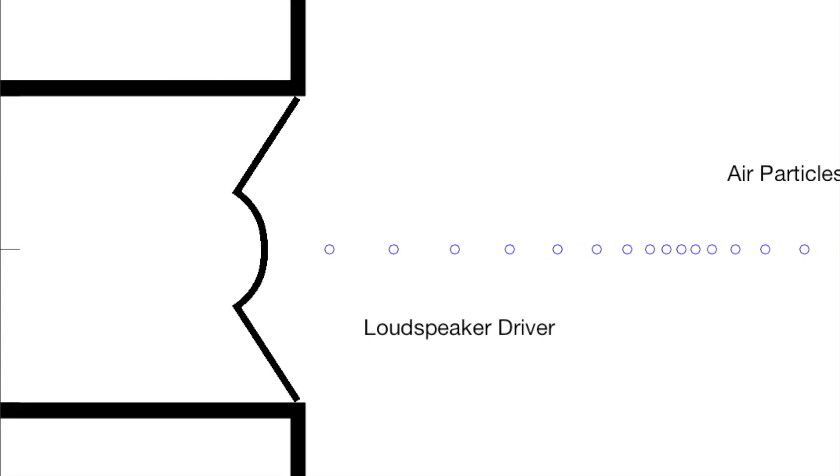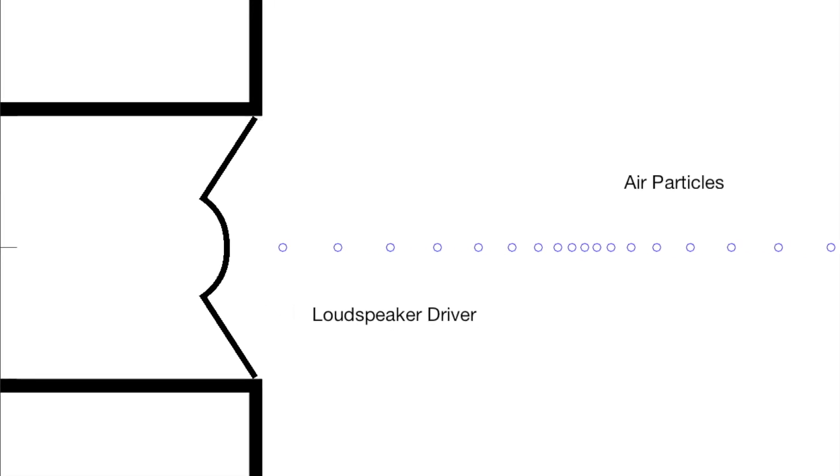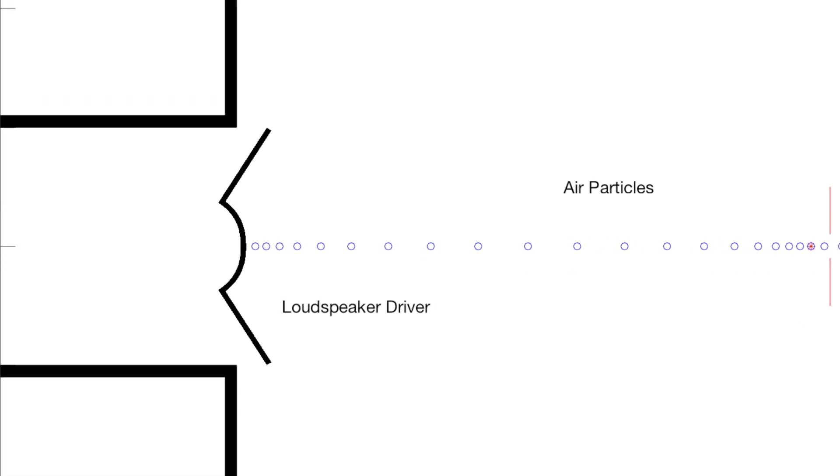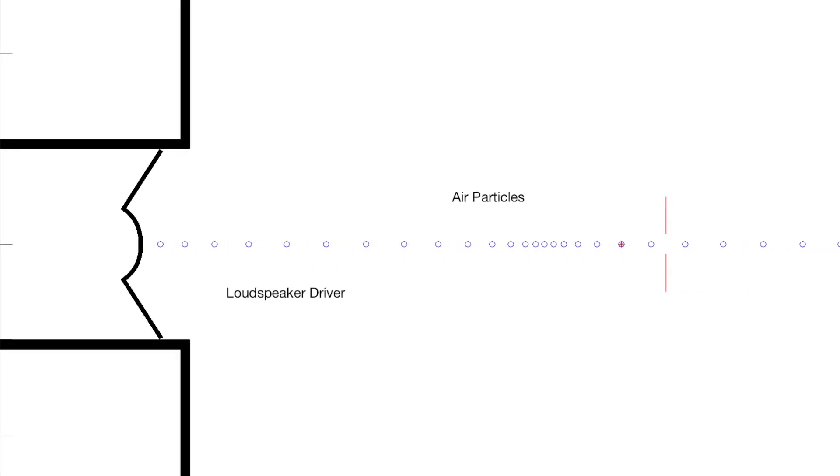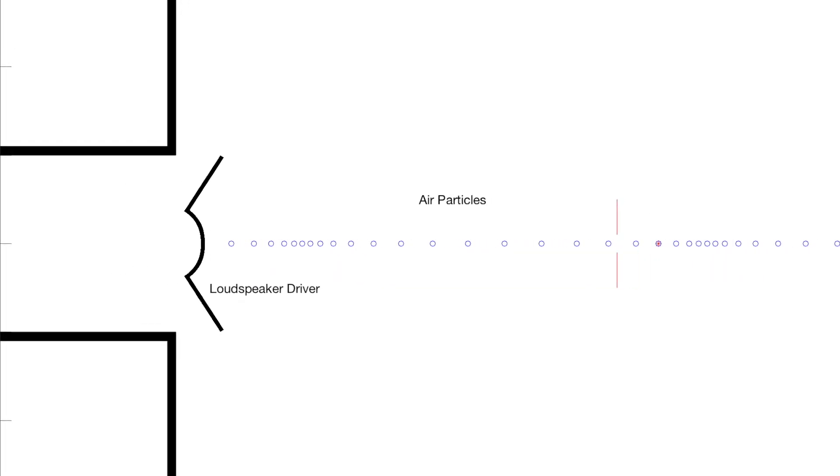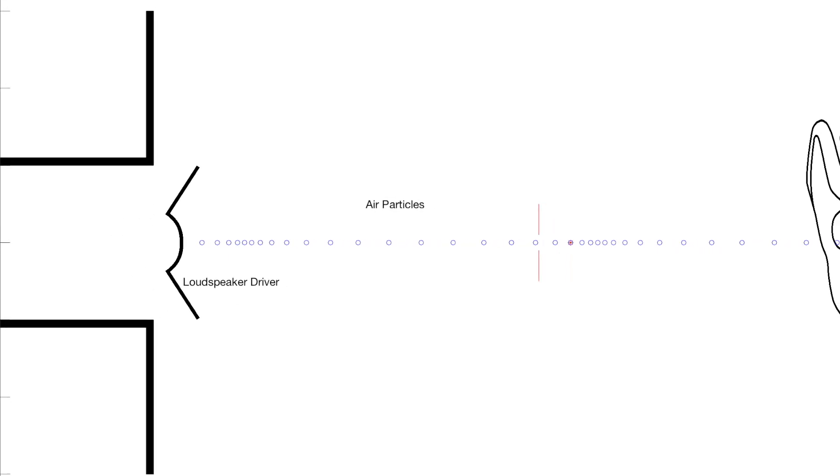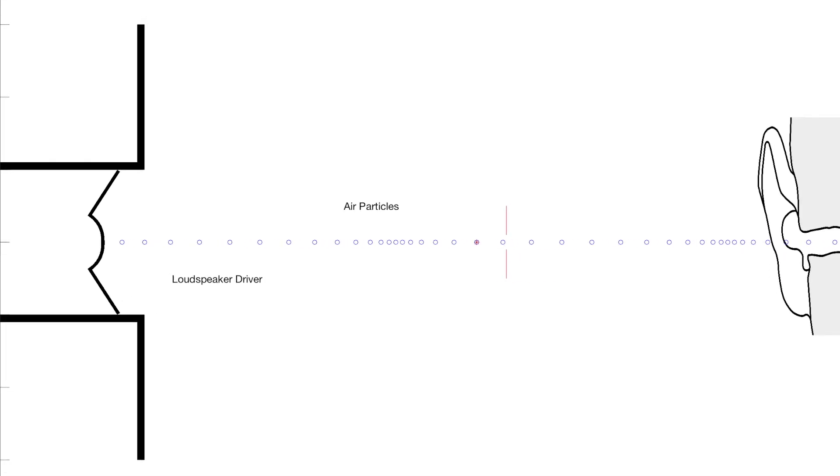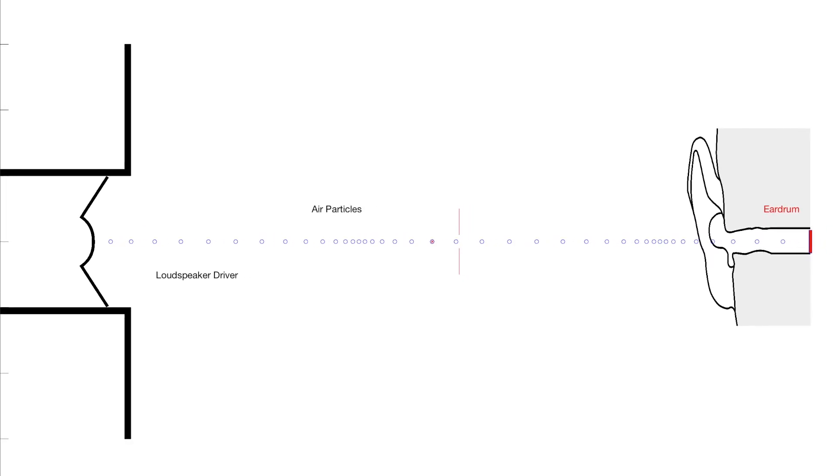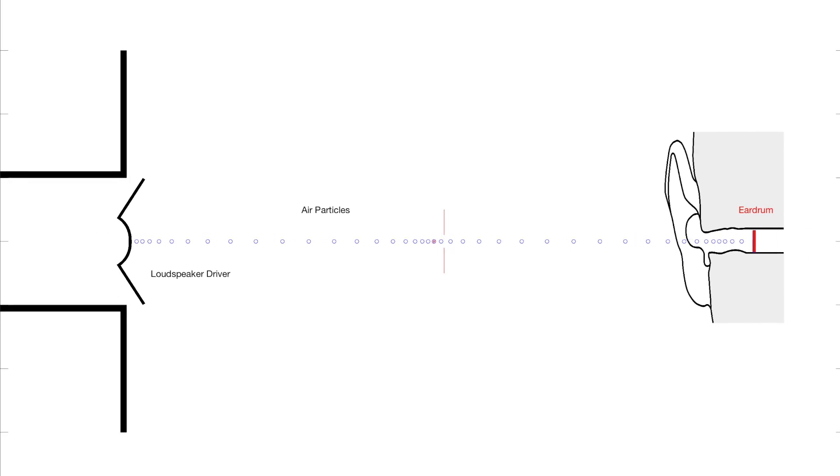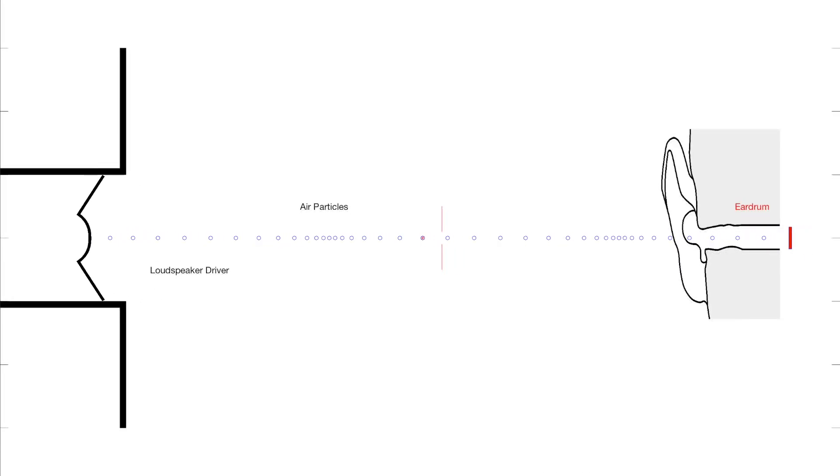We can change the frequency of the sound by changing how many times per second a loudspeaker driver moves in and out of the box. If it moves in and out 261 times per second, we'll hear a pitch that's the same as middle C on a piano. If we move it half as many times per second, we hear an octave below. If we move it two times as many times per second, we hear an octave above.